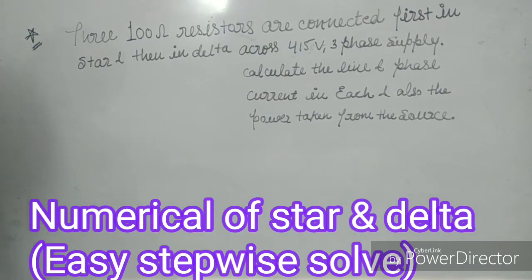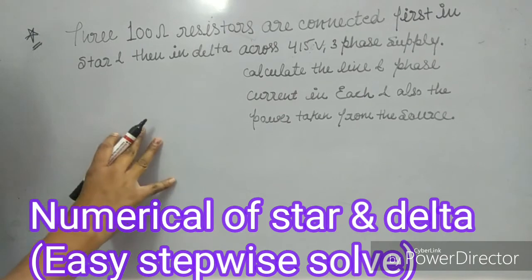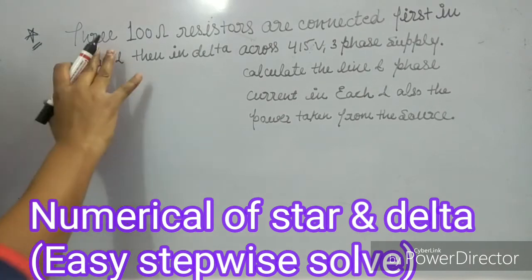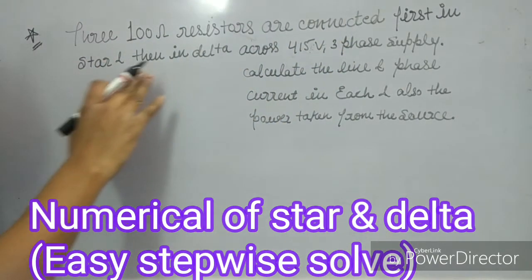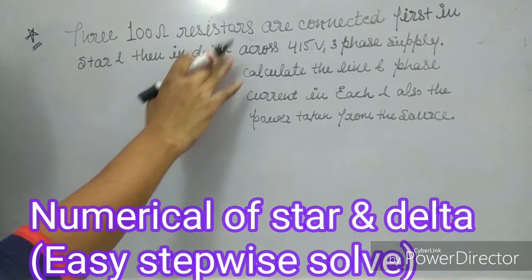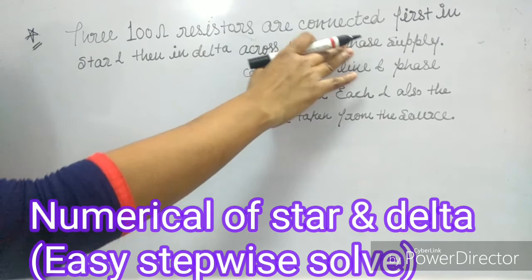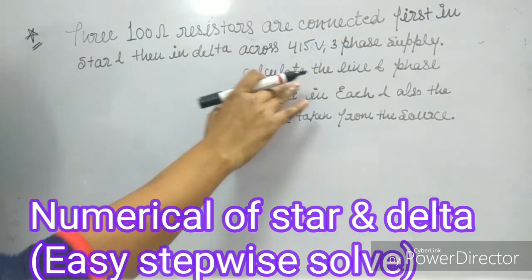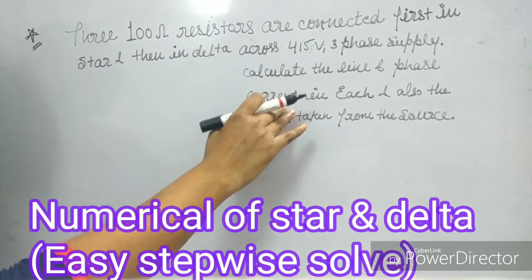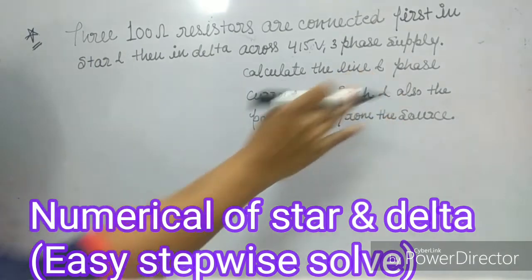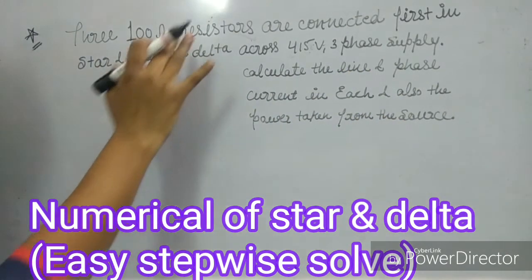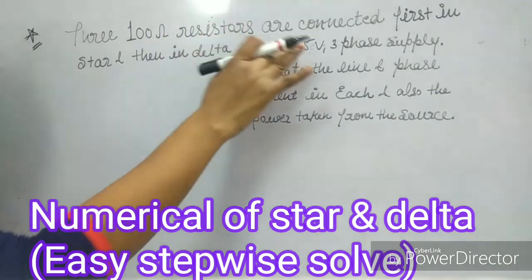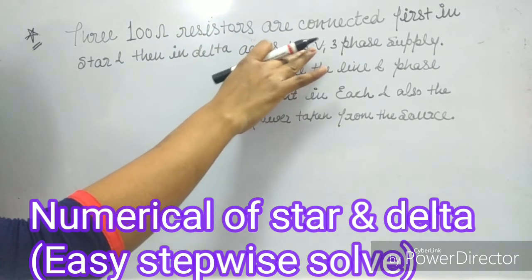Hello friends, today I am discussing numericals of delta and star connection. Here you can see 300 ohm resistors are connected first in star and then in delta across a 415 volt 3-phase supply. Calculate the line and phase current in each case, and also the power taken from the source.